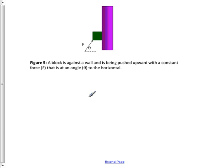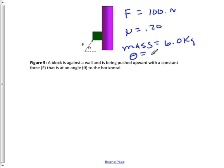It will block against the wall being pushed upwards with constant force F at some angle theta. Let's fill in some information for this first. Let's have force applied equal 100 newtons. Coefficient of friction equal to 0.20. Mass equal to 6.0 kilograms. And let's let the angle theta equal 70 degrees.